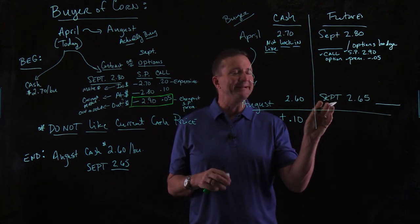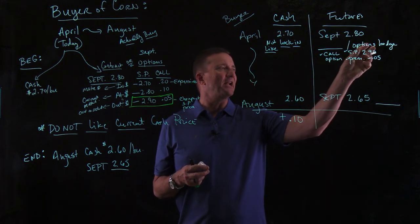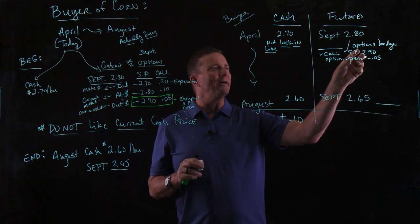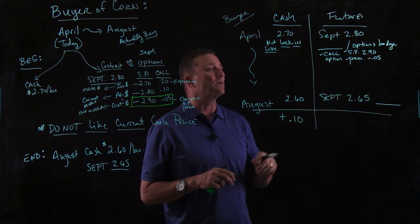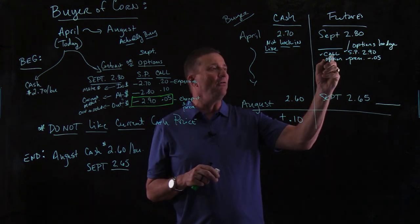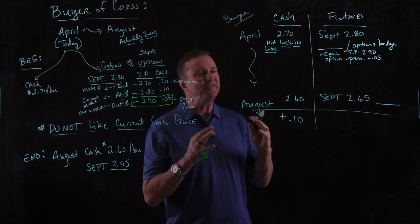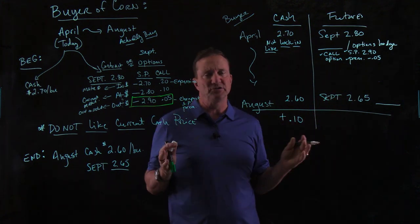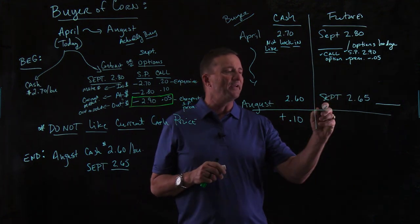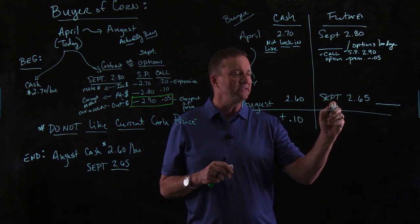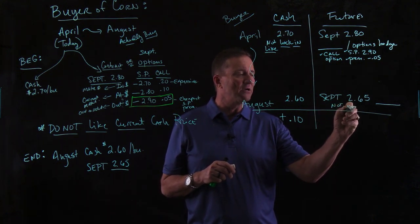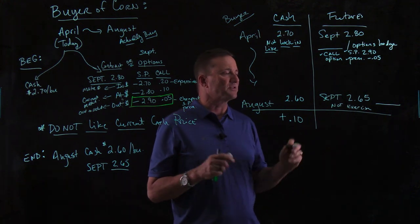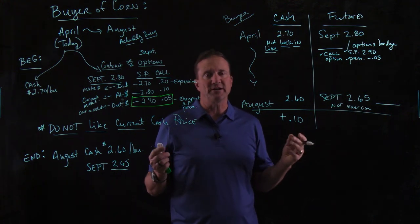We actually had an options hedge. It gives you the right, if you want — because it's a call — to buy for $2.90. If you did that, you would have to sell for $2.65 and lose even more money. So the answer is that we would not want to exercise our option. We don't want to exercise it, we don't want to take the position.